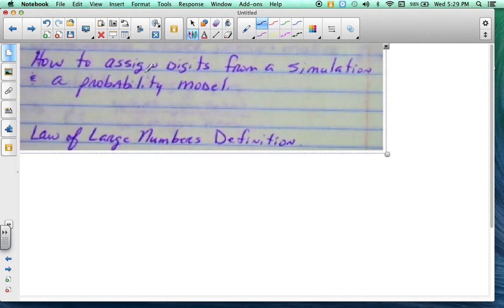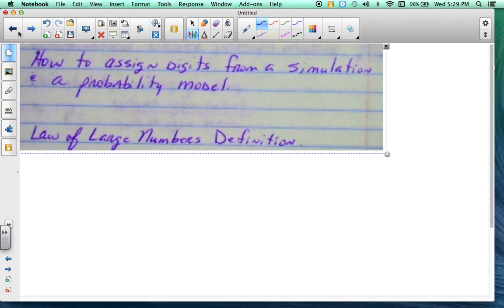You need to know how to assign digits from a simulation and a probability model, and you need to know the law of large numbers definition. So for instance, if I go back to this, these are not divisible by 10, so these would be whole numbers, or sorry, two-digit numbers that I would use to assign digits.